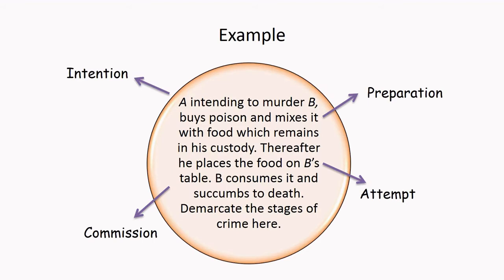Now let us demarcate the stages of crime in the example. When A is intending to murder B, he is in the first stage of intention. When he buys poison and mixes it with food and keeps it in his custody, he is in the stage of preparation. Once he places the food on B's table, he has attempted the crime — attempted to commit murder, the third stage of crime commission. And once B consumes it and succumbs to death, it is the last stage, the commission stage, which is murder.